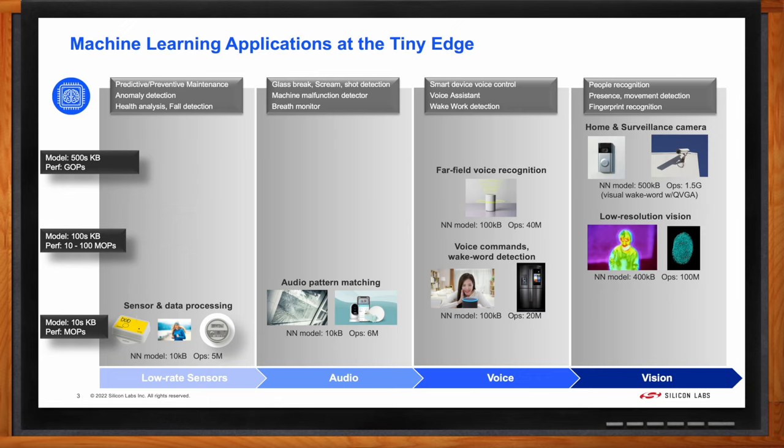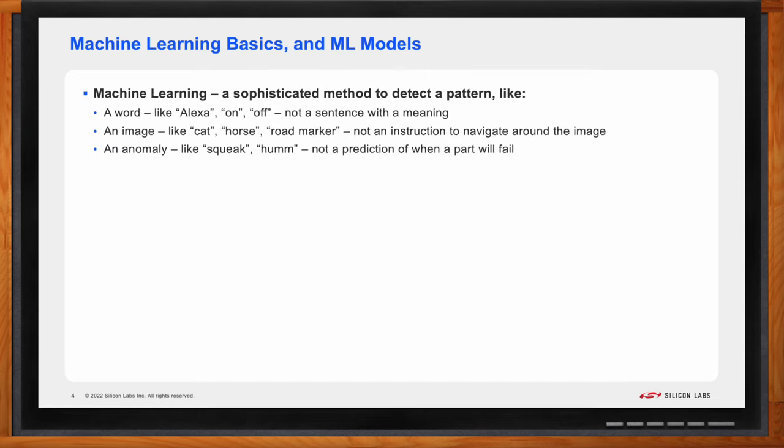That makes sense. Now, the term machine learning is so broad. I hear that term used with artificial intelligence, of course. But Dan, what exactly is machine learning? Yeah, I get that question. Let me take you through some basics about machine learning to explain it. In the context of embedded processors with fixed resources like RAM and Flash, machine learning should just be thought of as a sophisticated method of pattern matching. For instance, detecting a word, like someone speaking Alexa or on or off. It's not the intelligence to recognize the meaning of a sentence or detecting an image, like a cat or a horse or a road marker. It's not the instruction to navigate or detecting an anomaly, like an unusual squeak or hum, not a prediction of a part failure. This sophisticated method uses a concept called deep learning or neural networks. And basically, this method operates like a brain. But this brain must be trained to detect those patterns of interest for a particular application.